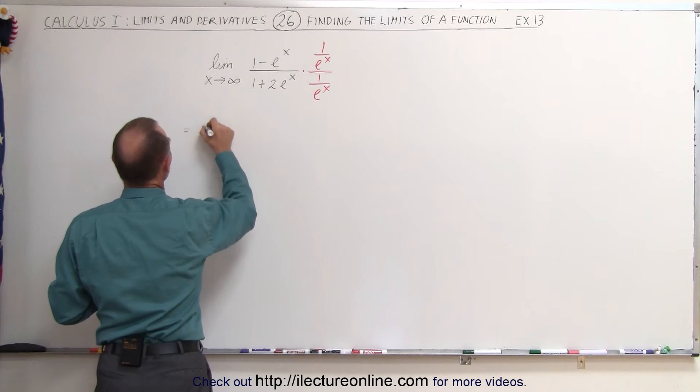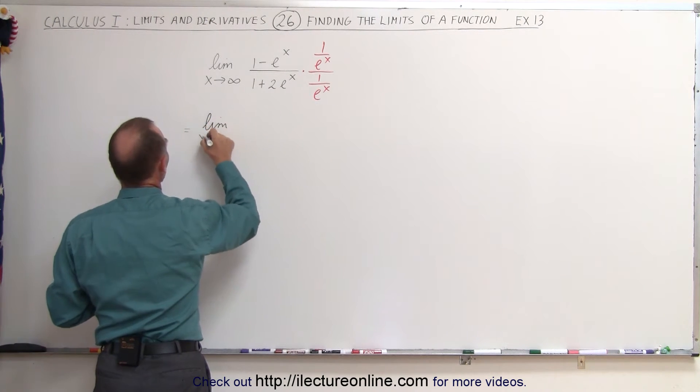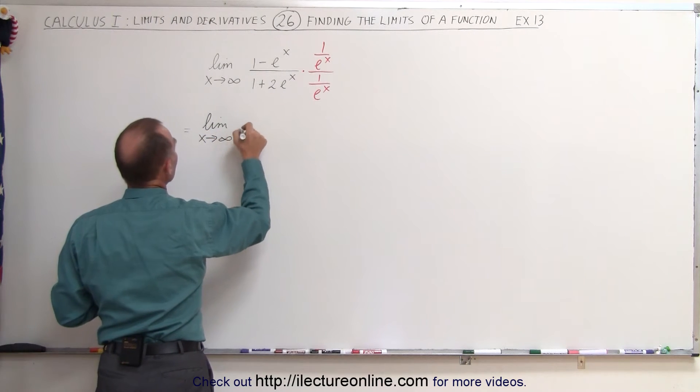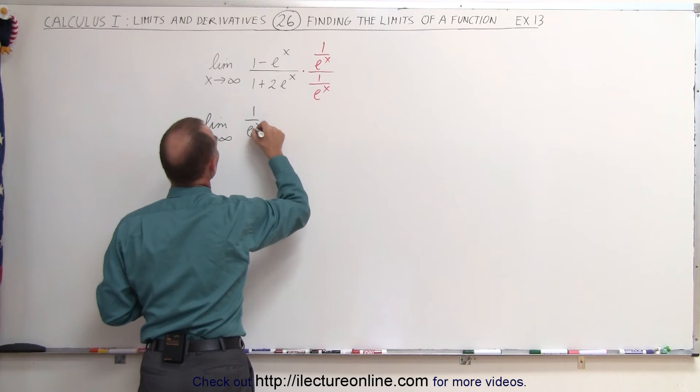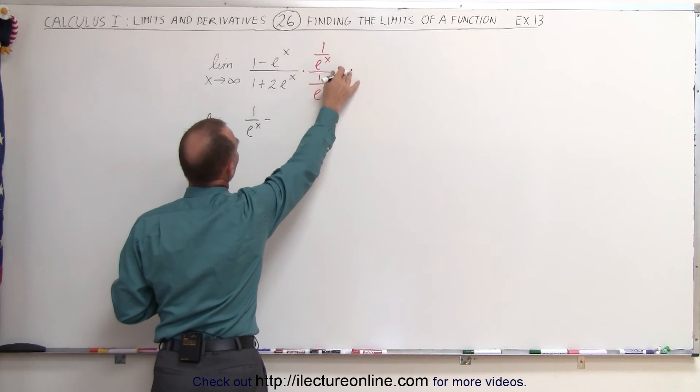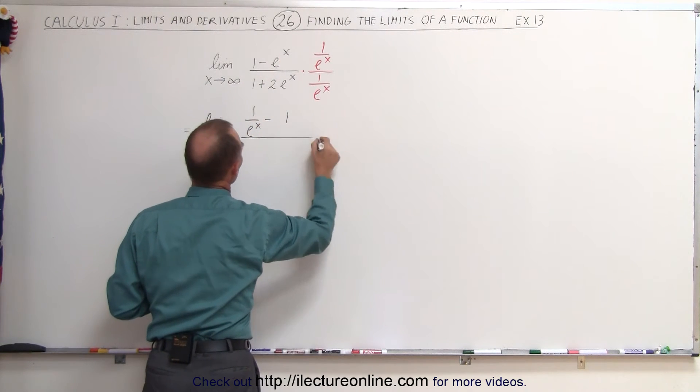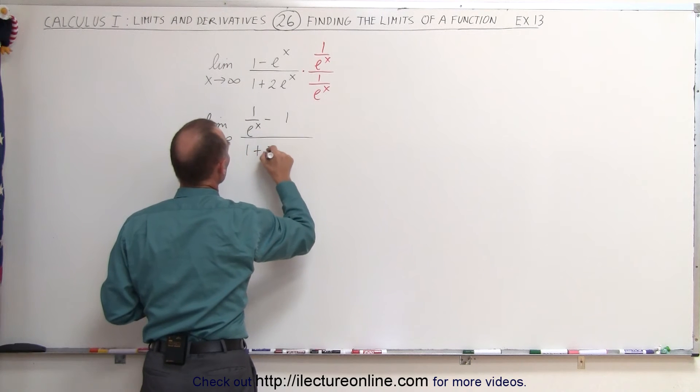So let's try and see what that looks like. So we have the limit as x approaches infinity. When we multiply 1 times that we get 1 over e to the x minus e to the x divided by e to the x is equal to 1. That's the whole thing divided by 1 plus 2 times.